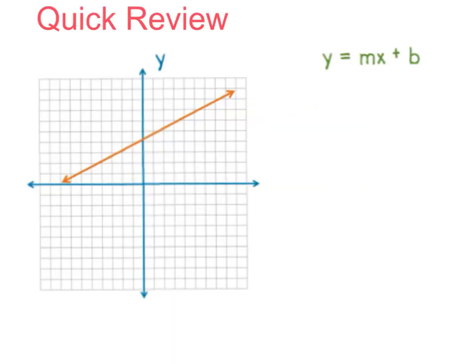First let's do a quick review. Any linear equation can be written in the form y equals mx plus b, where m represents our slope or our rate of change or our growth, and b is our y-intercept.